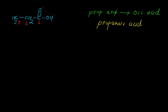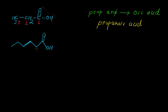Now let us take another example where some more substituents are present. We have a C double bond O — OH (carboxyl) group, one carbon-carbon double bond, one methyl substituent, and one bromine substituent.